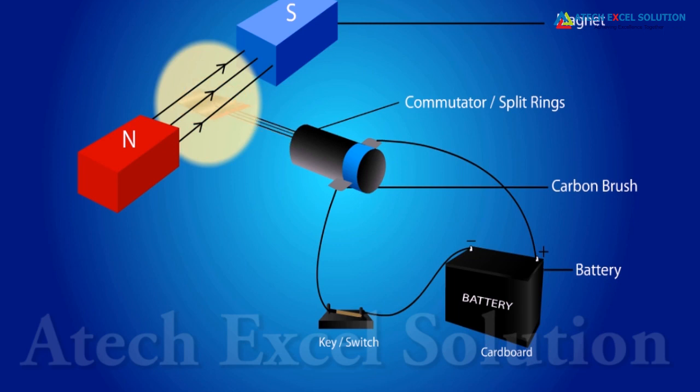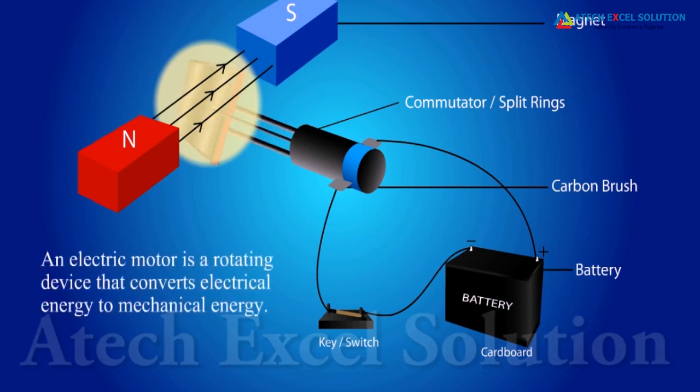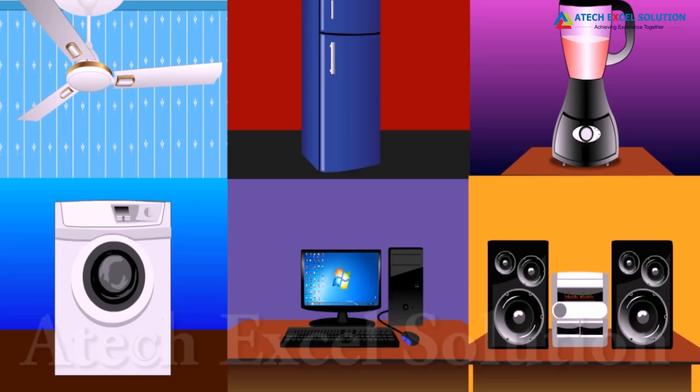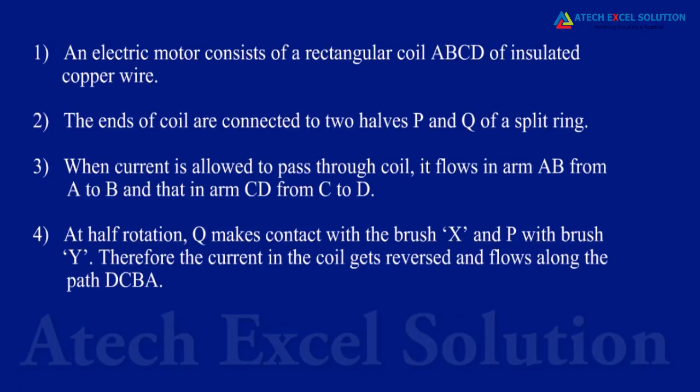What is an electric motor? An electric motor is a rotating device that converts electrical energy to mechanical energy. Electric motor is used in electric fans, refrigerators, mixers, washing machines, computers, and music players.